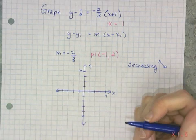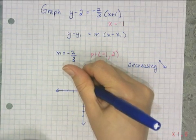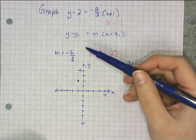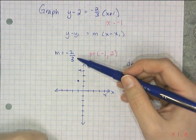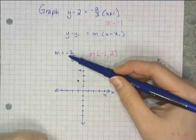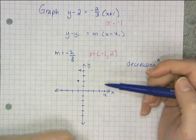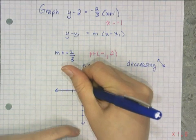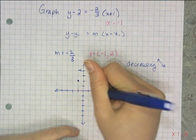So let's plot the point first. So I want to plot negative 1, 2. And negative 1, 2 is there. And so remember that to use the slope, the numerator is the vertical change and the denominator is the horizontal change. And if it's negative, that means I'm going to go down 2 and then to the right 3. So I go down 2, 1, 2, and then over 3, 1, 2, 3, to find my next point.